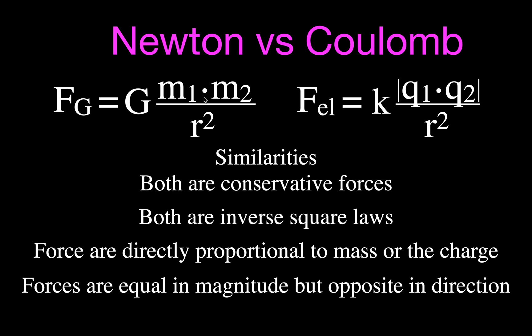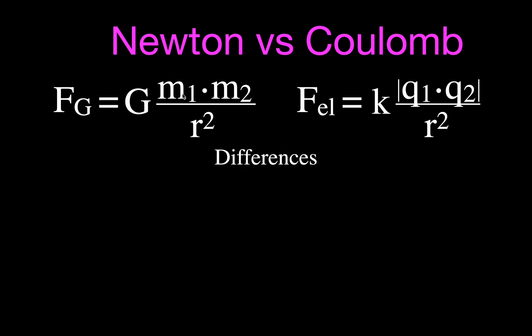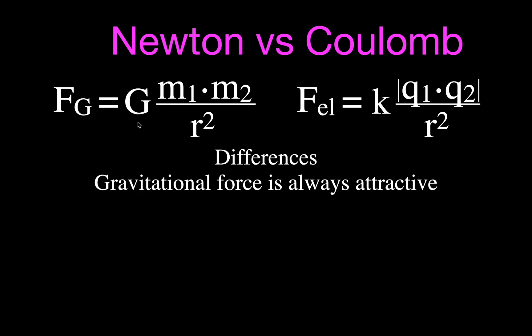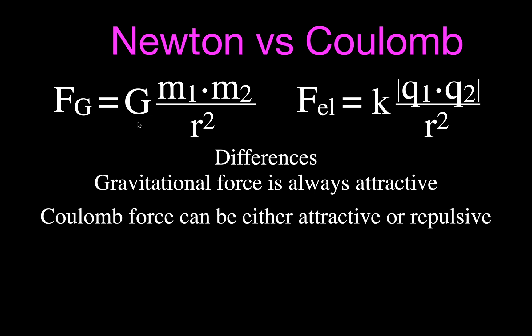You'll see that when we do examples towards the end of this video. Now for the differences: gravitational force is always attractive — two objects with mass always attract, they do not repel. The Coulomb force can be either attractive or repulsive. Two of the same charges — two positive or two negative — will repel. Opposite charges, negative and positive, will always attract.